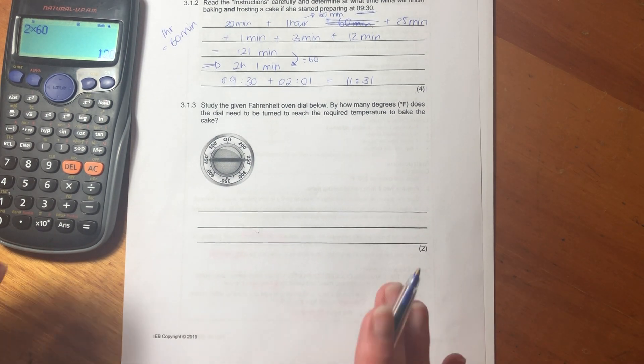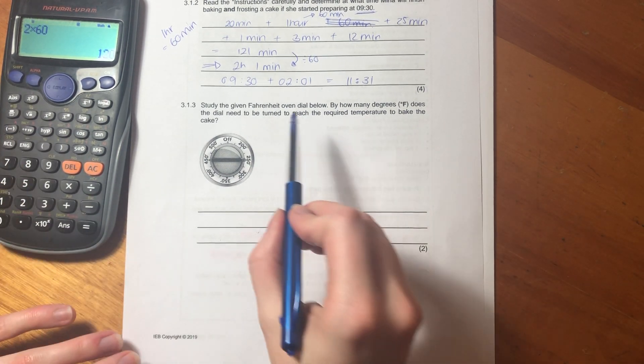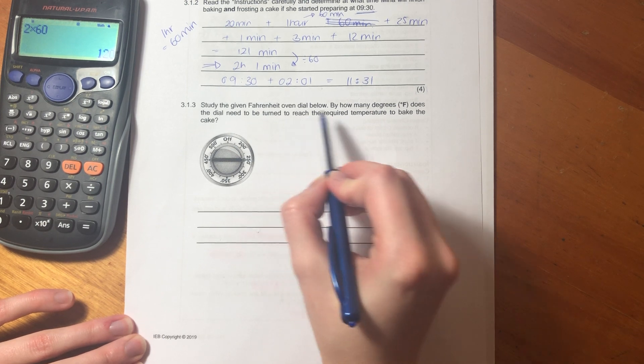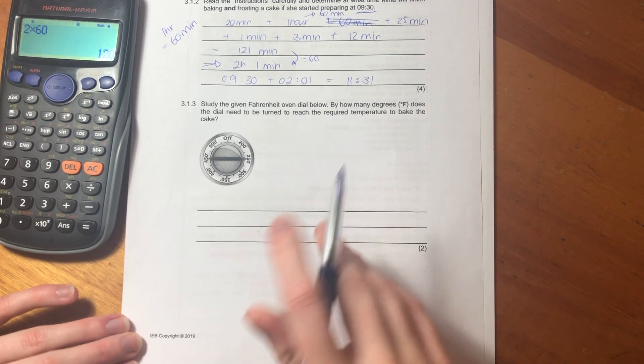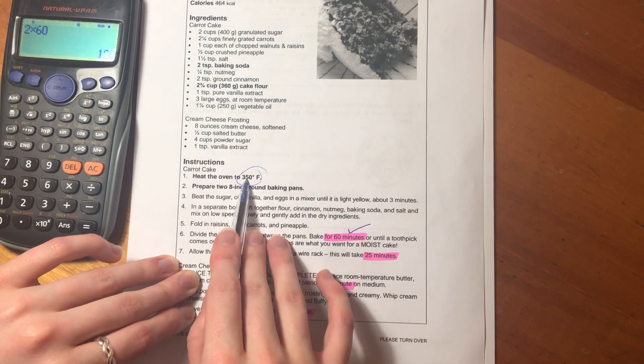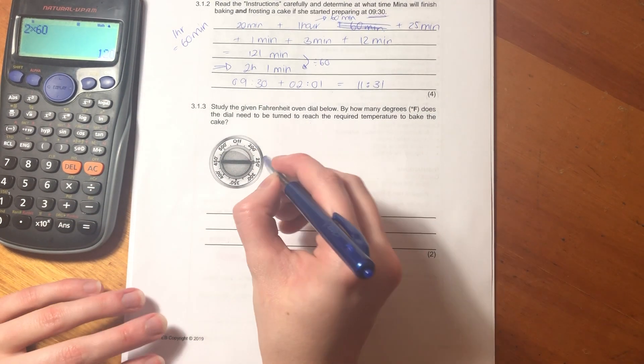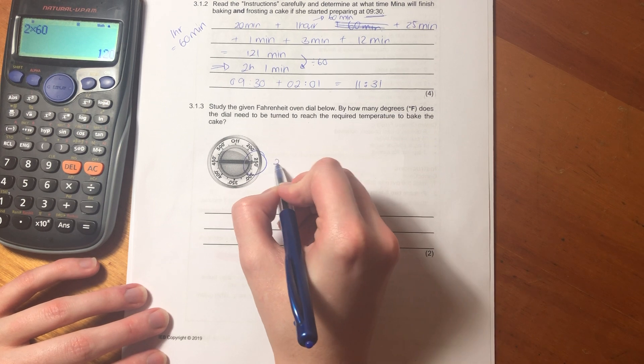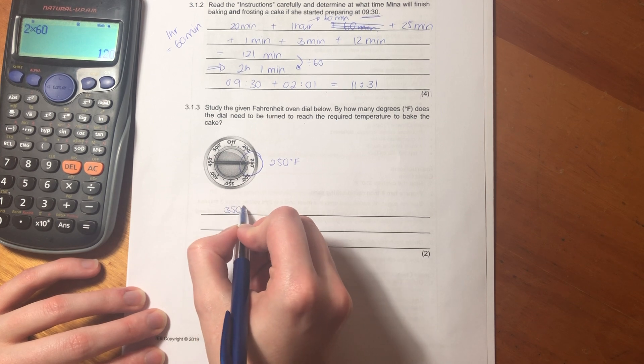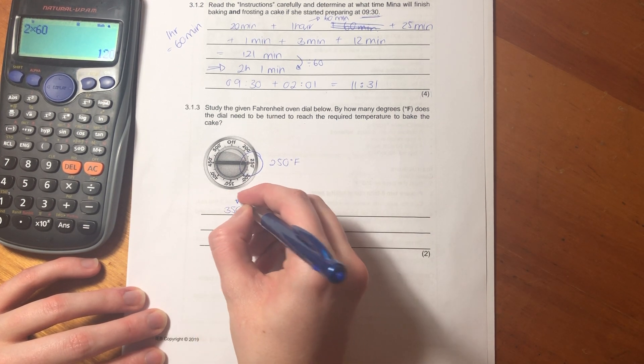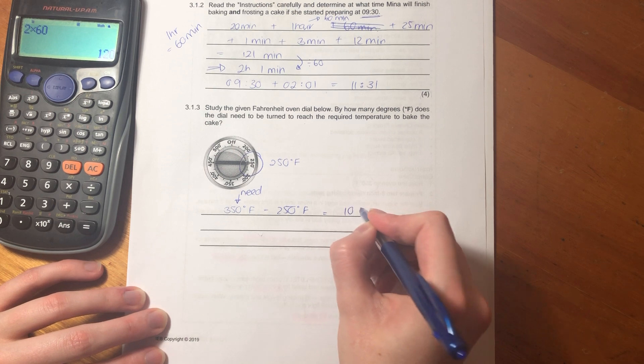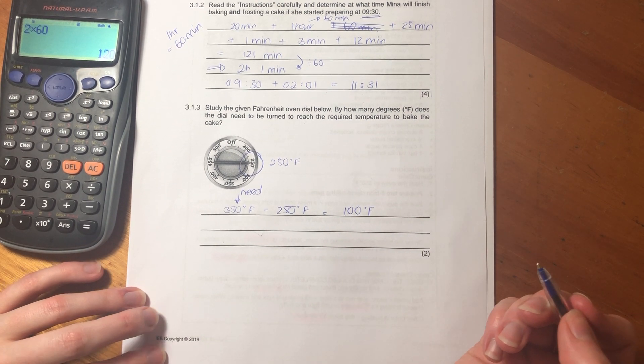Let's now move on to 3.1.3. It says study the given Fahrenheit oven dial below. By how many degrees Fahrenheit does the dial need to be turned to reach the required temperature to bake the cake? What we need to know is what is the required temperature? There it is. It needs to be 350 degrees Fahrenheit. But here, from what we can see, you have to look where the arrow is pointing, is 250 degrees Fahrenheit. So we say 350 Fahrenheit, that's what we need. And let us subtract what we have, and that gives us 100 degrees Fahrenheit.